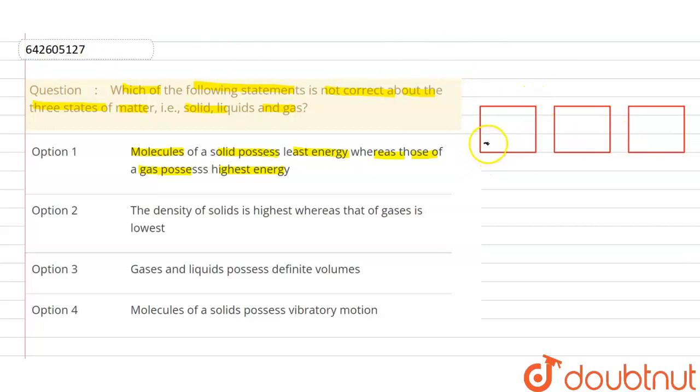be almost zero. But in case of gas they possess rapid random motion, so that means it has a velocity.